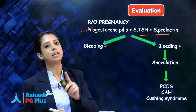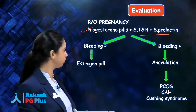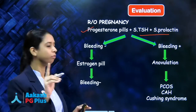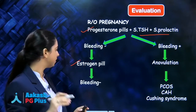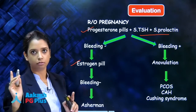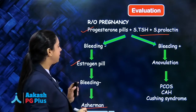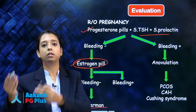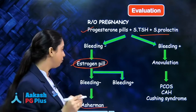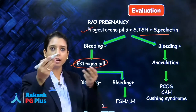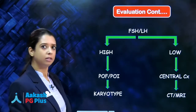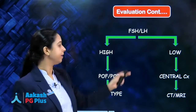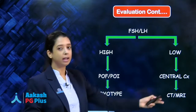If the patient does not bleed on the progesterone challenge test, it means she lacks estrogen. Give her estrogen. If she still does not bleed even after estrogen and progesterone, the defect lies in the uterine lining — it is a case of Asherman syndrome. If after giving estrogen the patient starts bleeding, it means the gonads are not working properly. The cause could be central or in the ovary itself. Differentiate by checking gonadotropin levels: if FSH/LH is high, it is ovarian failure — do a karyotype. If FSH/LH is low, it is a central cause in the hypothalamus or pituitary — do CT scan and MRI.